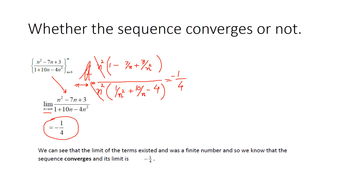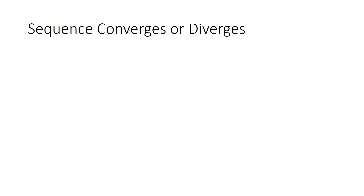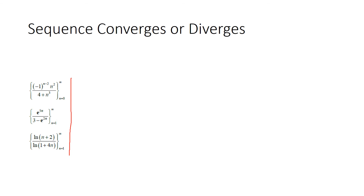We see that the limit of the terms exists, which is minus 1 by 4. The limit exists and is a finite number, therefore the sequence converges and its limit is minus 1 by 4. There are three sequences we will now discuss — whether these sequences converge or diverge. Let's look at the first one: we have to check the limit as n approaches to infinity.